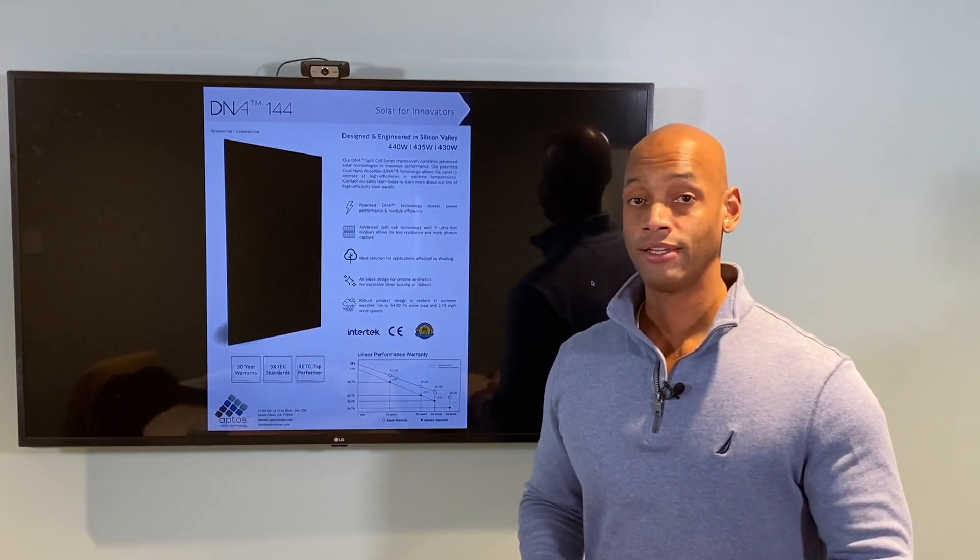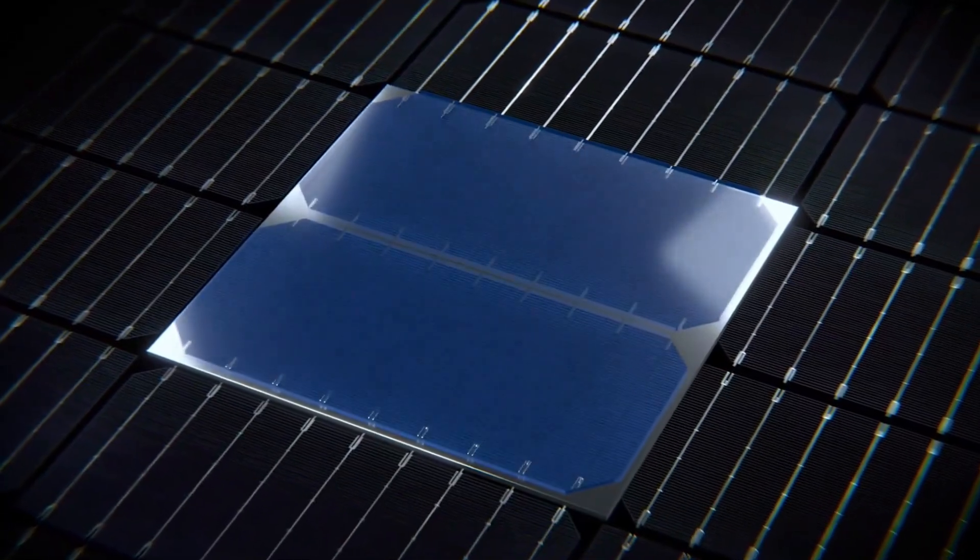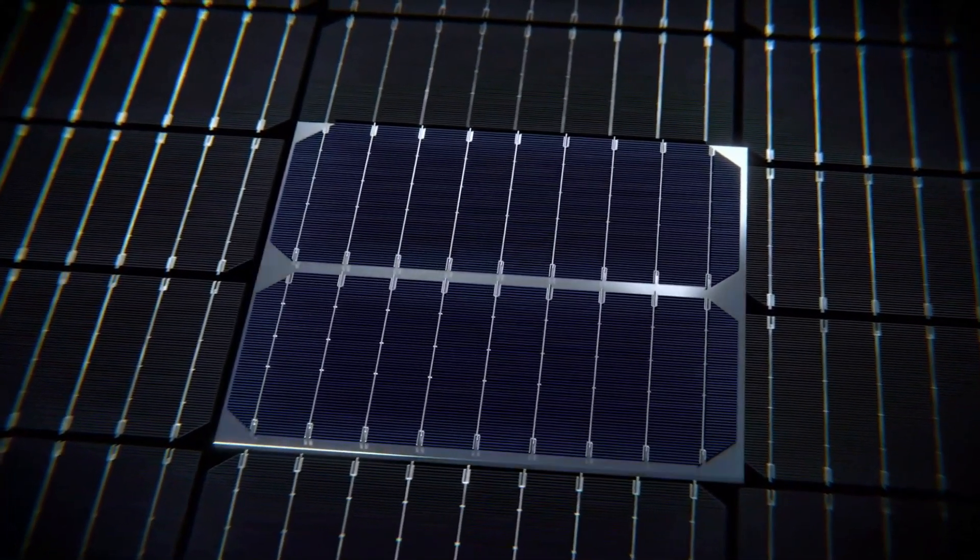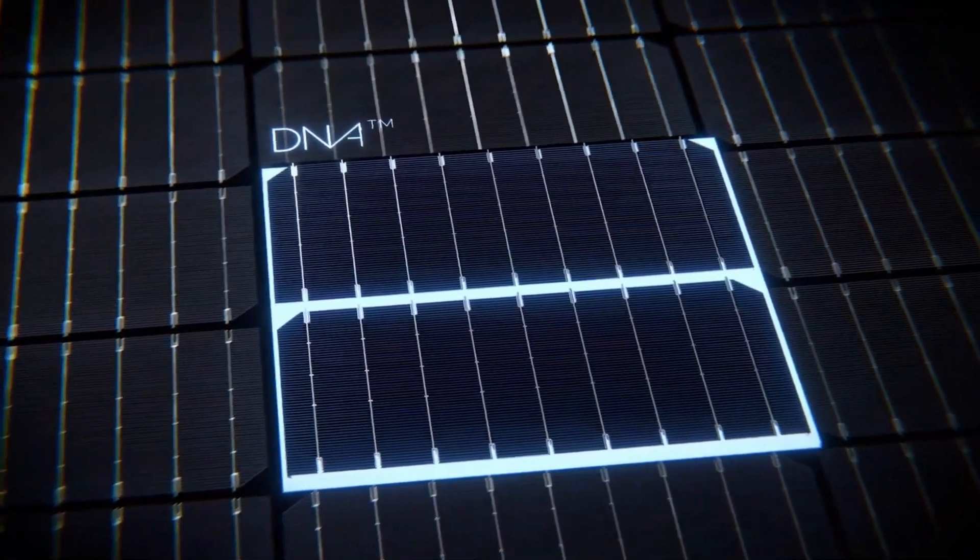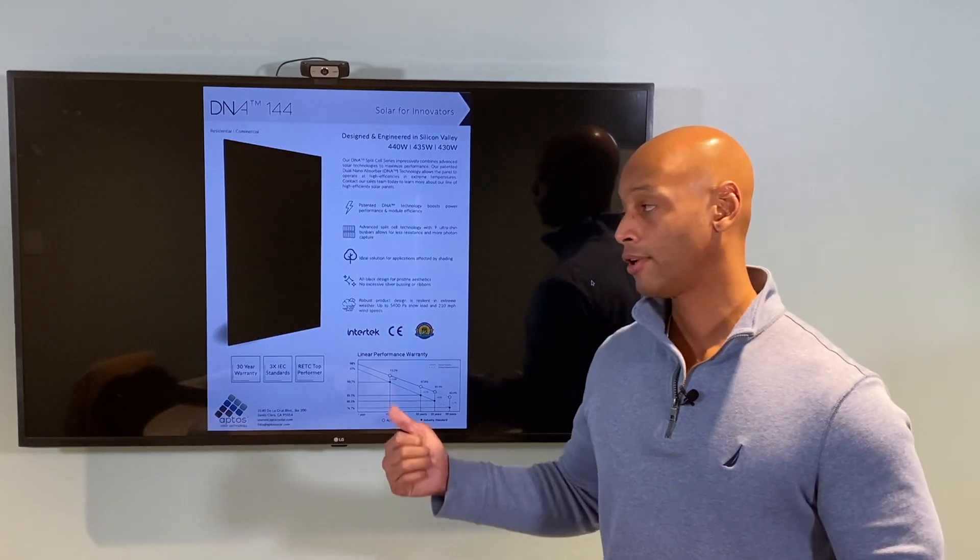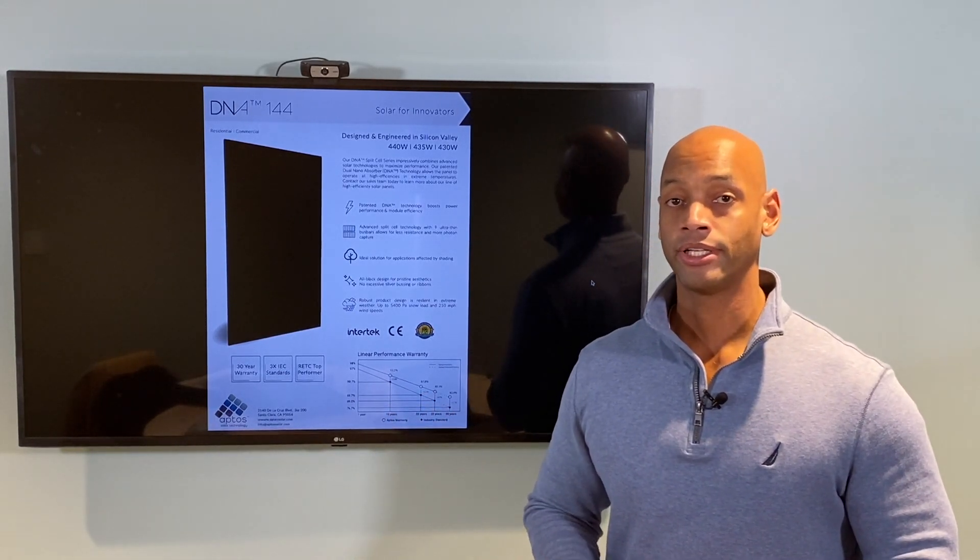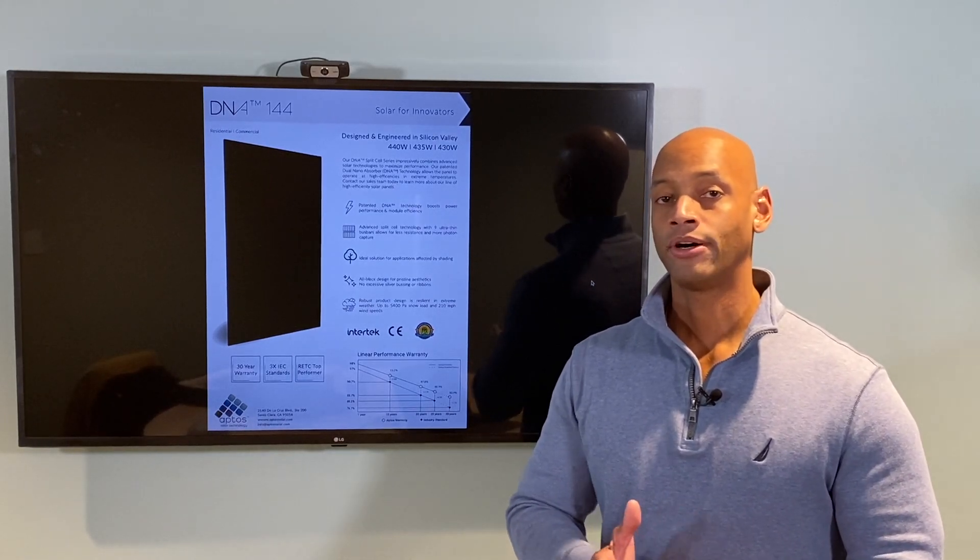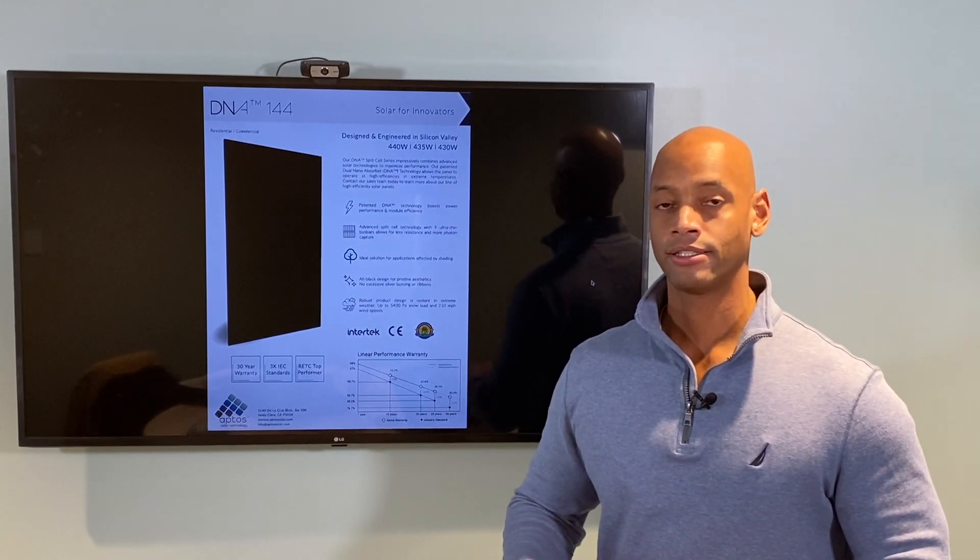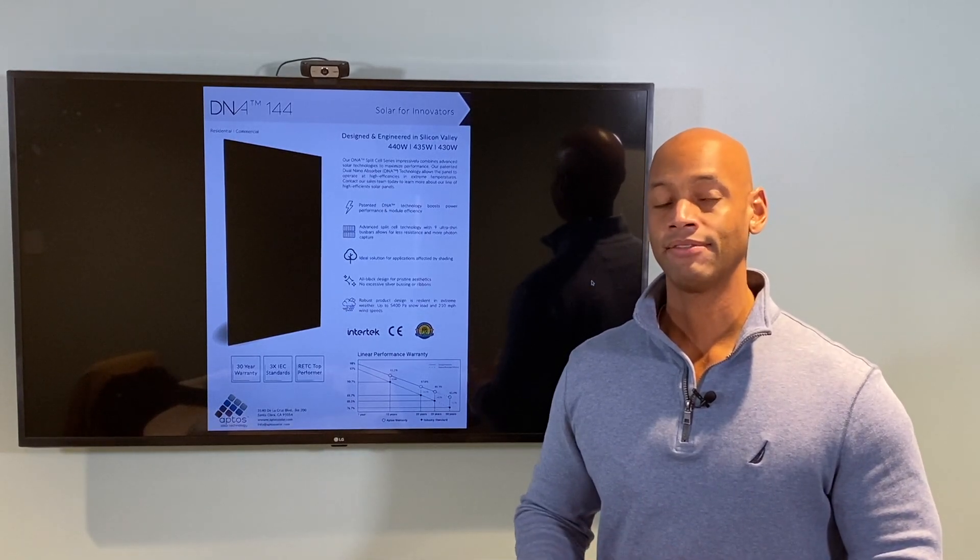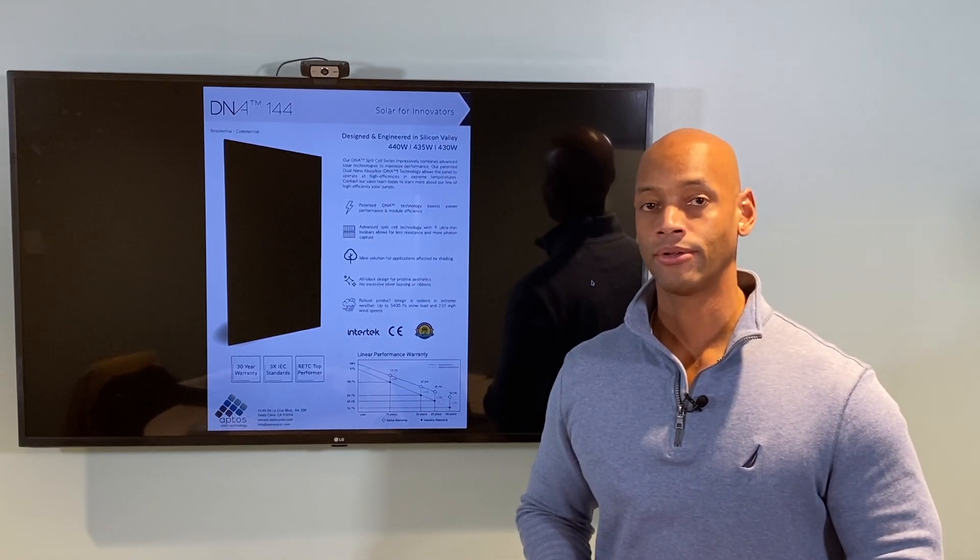Another unique feature is the 9 bus bar design. The 9 bus bars reduces internal resistance and provides multiple pathways for electrons to flow through the module. For example, if part of the solar module is covered by shade there will be alternate paths for the electricity to continue to flow through that module, thus mitigating the negative impacts of shading on your solar array.